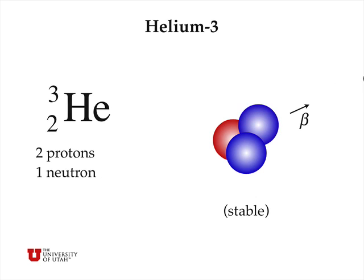What happens with tritium is that every once in a while, one of the neutrons will spit out an electron called a beta particle, and that will turn a neutron into a proton. Because we have two protons, we have an atom of helium instead of hydrogen — specifically helium-3, because it has two protons and one neutron. Helium-3 is stable, and so it is the main product of the nuclear decay of tritium.